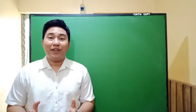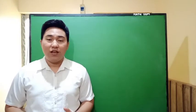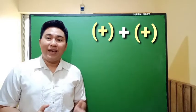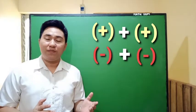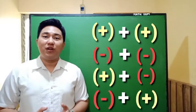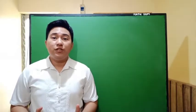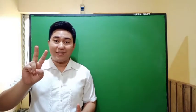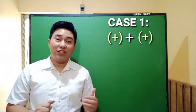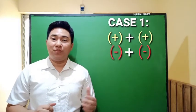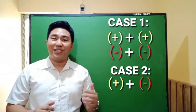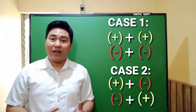In adding integers, we have four possible combinations: a positive number added to a positive number, a negative number added to a negative number, a positive number added to a negative number, and a negative number added to a positive number. From these combinations, we will divide this into two cases. Case one has positive plus positive and negative plus negative. Case two has positive plus negative and negative plus positive.